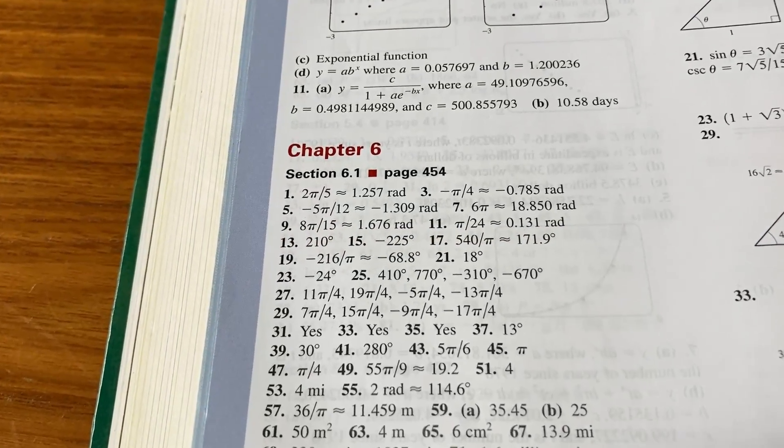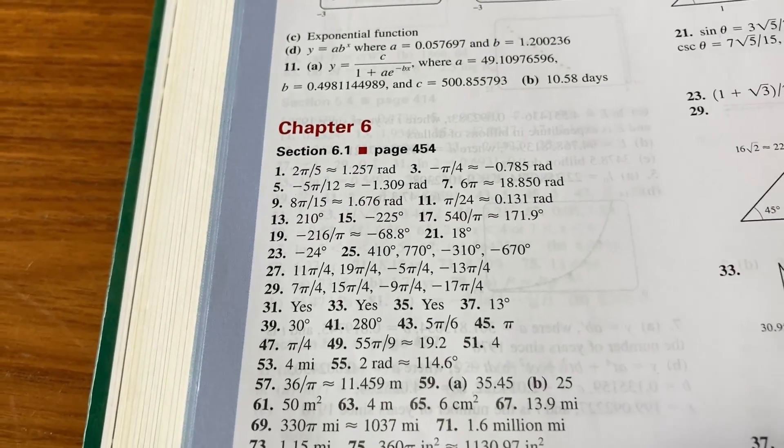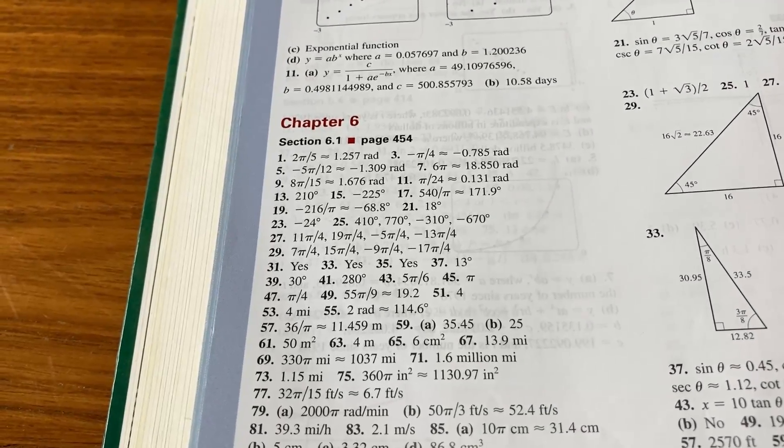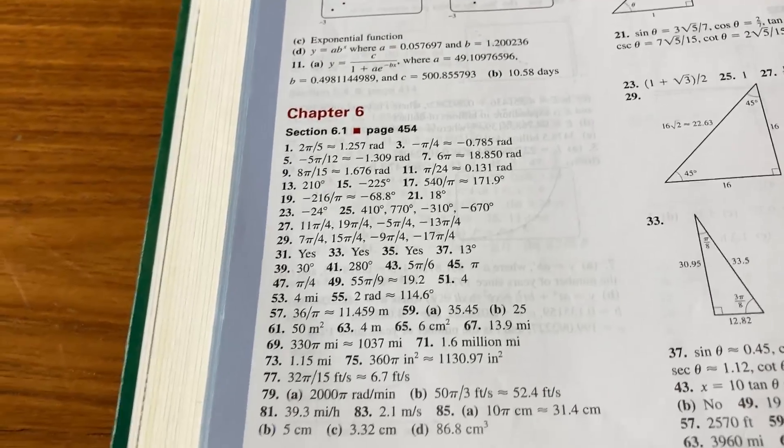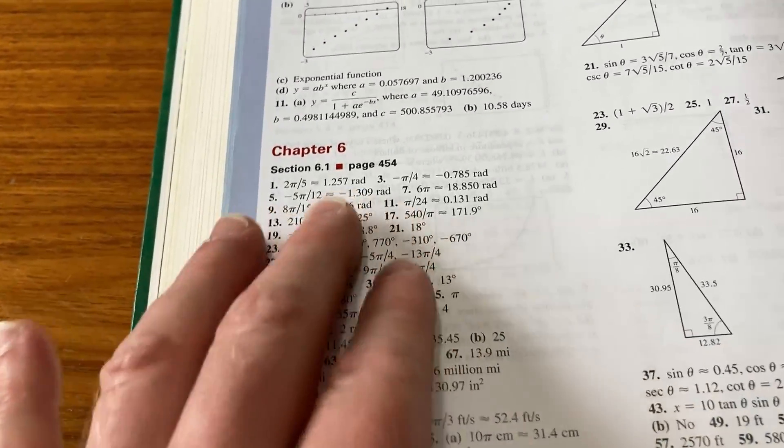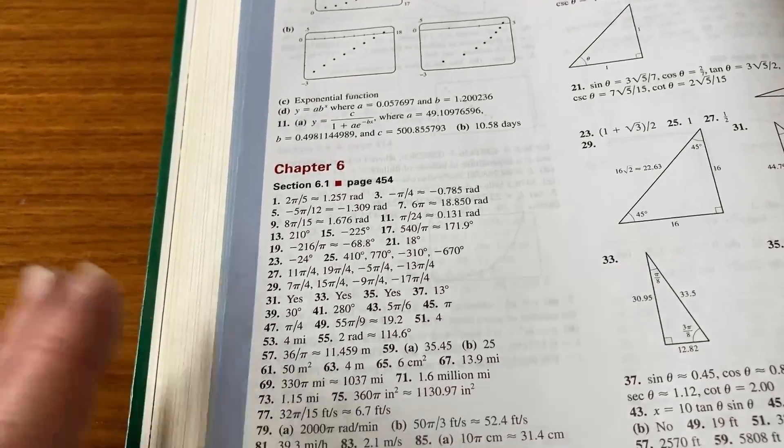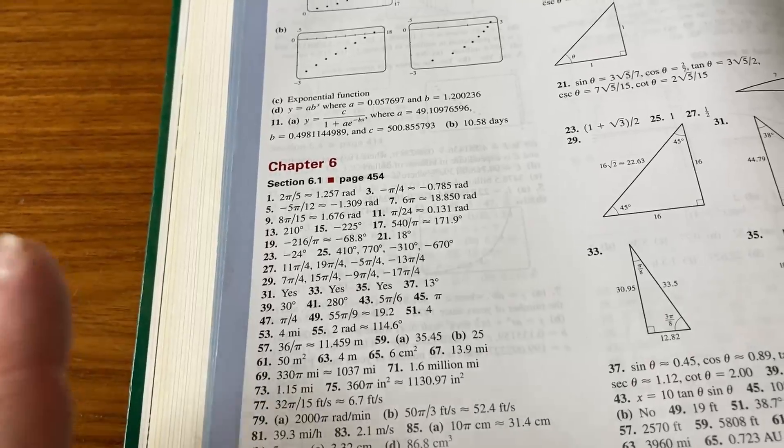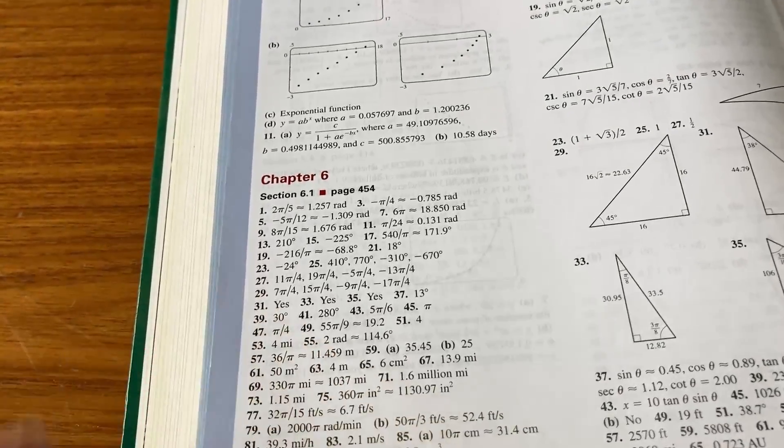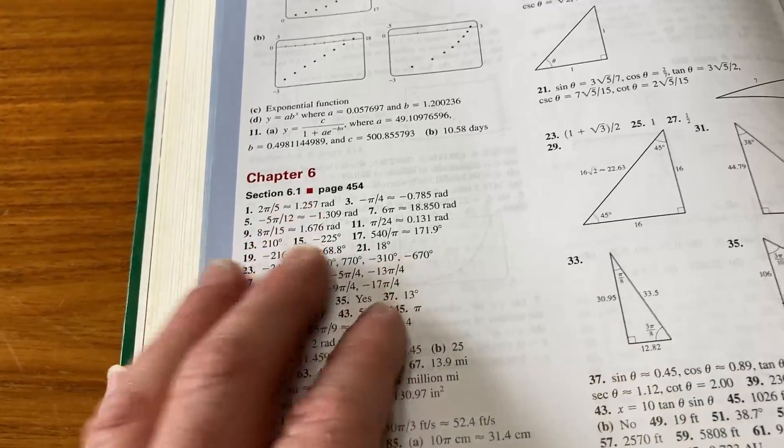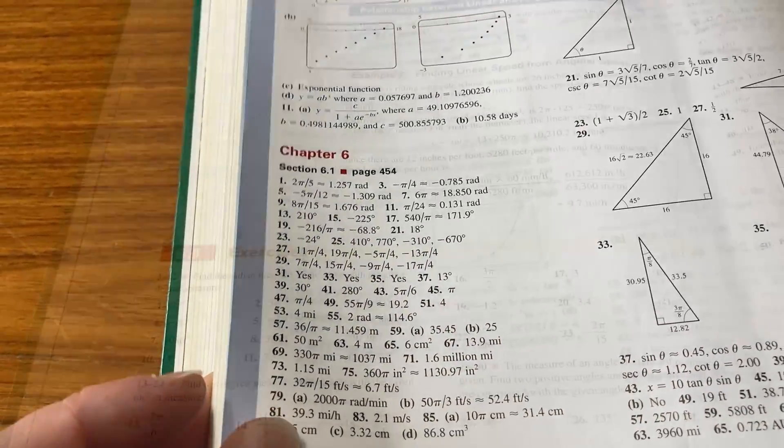So here you see the back of the book, and it has answers to the odd-numbered problems. So that's super useful. It would be nice if you had answers to all of the problems. Sometimes, if you get an instructor's edition of the book, you do have answers to all the problems. So again, for the sake of just simplicity, let's assume you just get a regular book. Pretty much every algebra and trig book that's relatively modern is going to have answers to the odd-numbered problems.